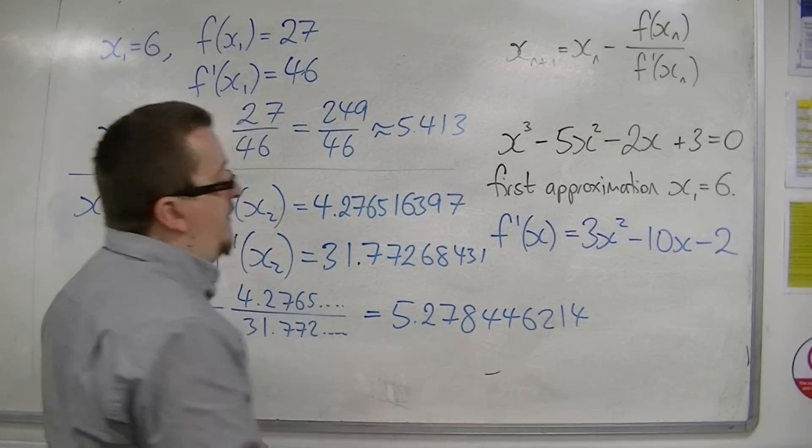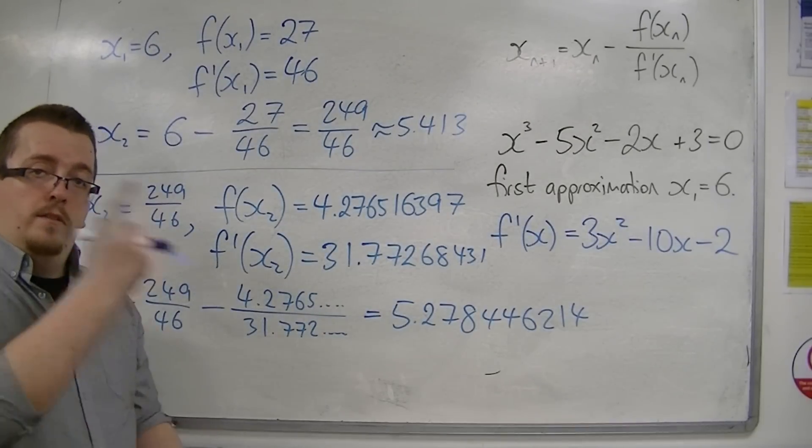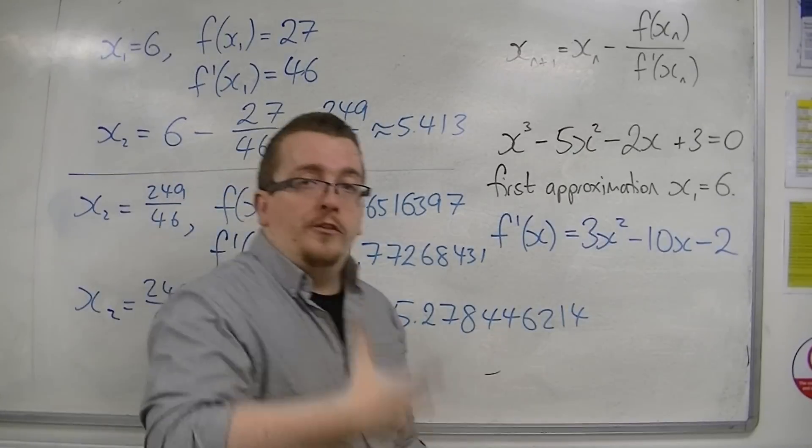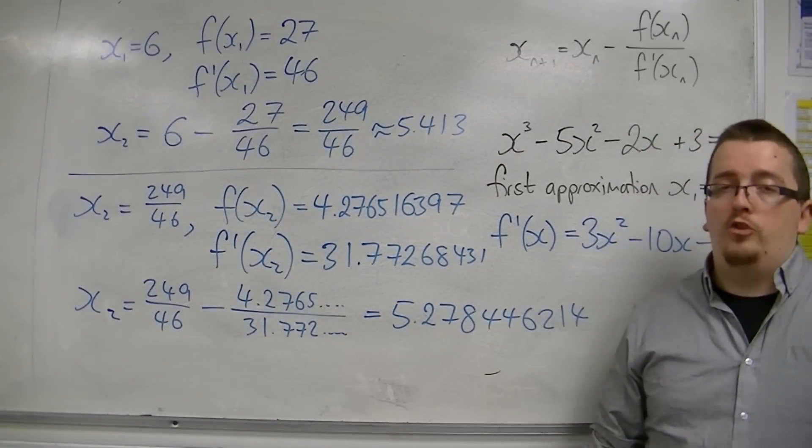So 5.278 to 3 decimal places. And that would be my second approximation. Sorry, that was x3. And then you could keep going for x4, x5. And each time you would be homing in closer and closer to the actual root and solution.